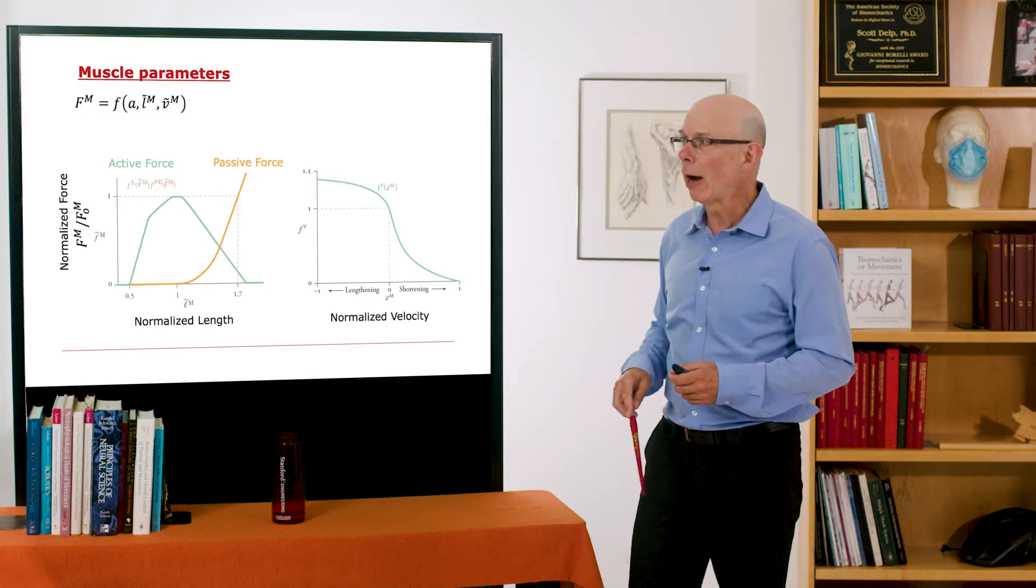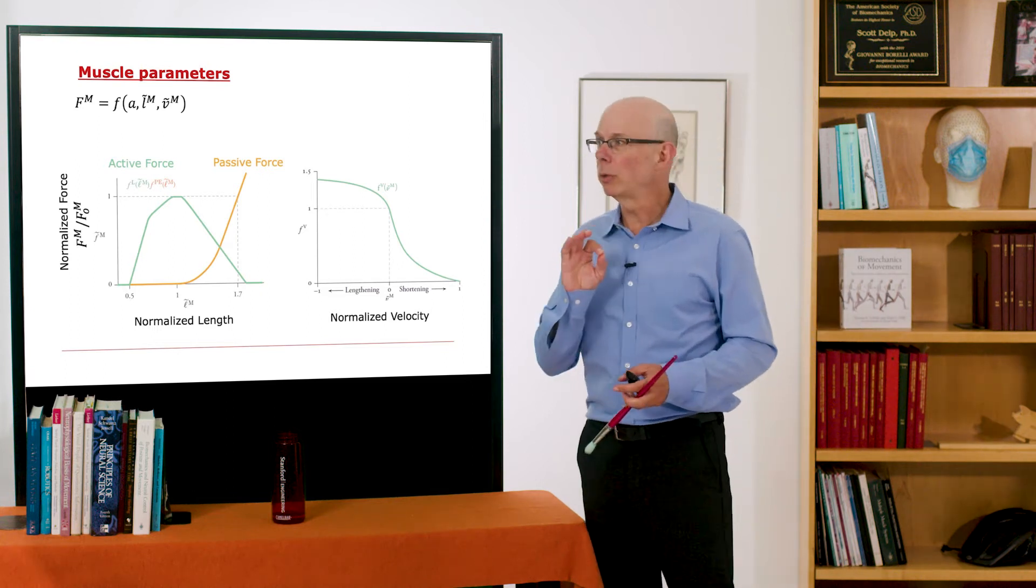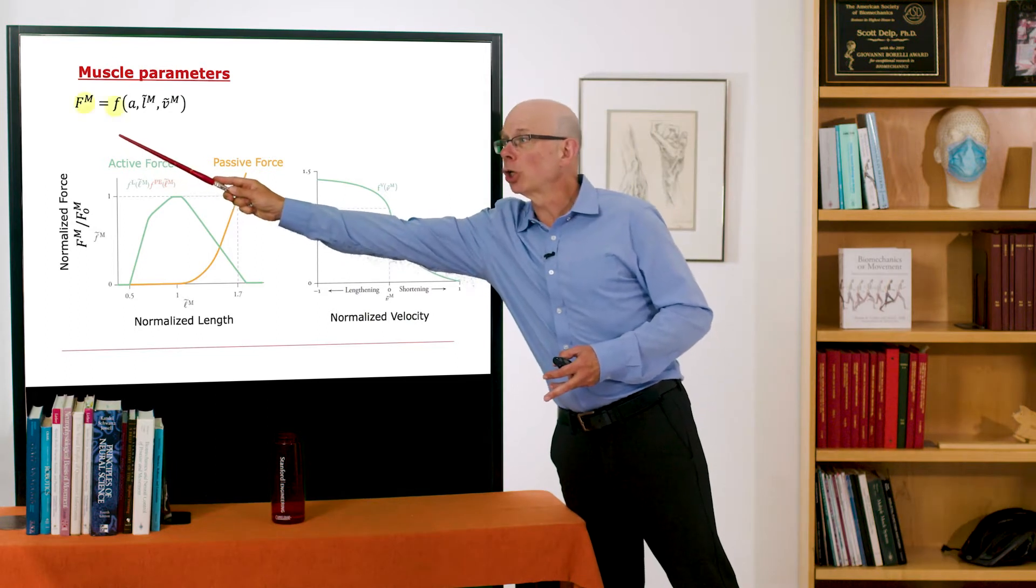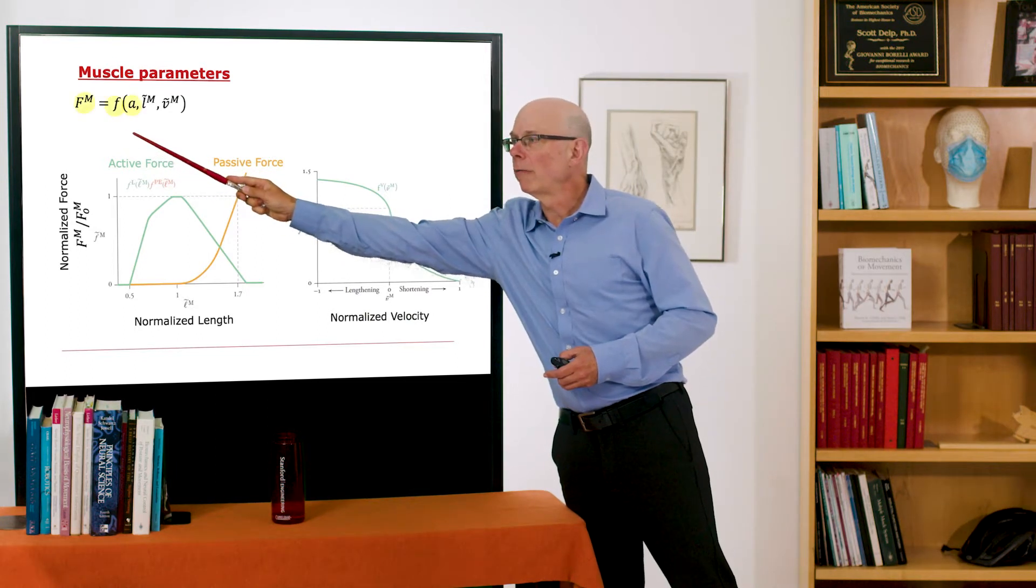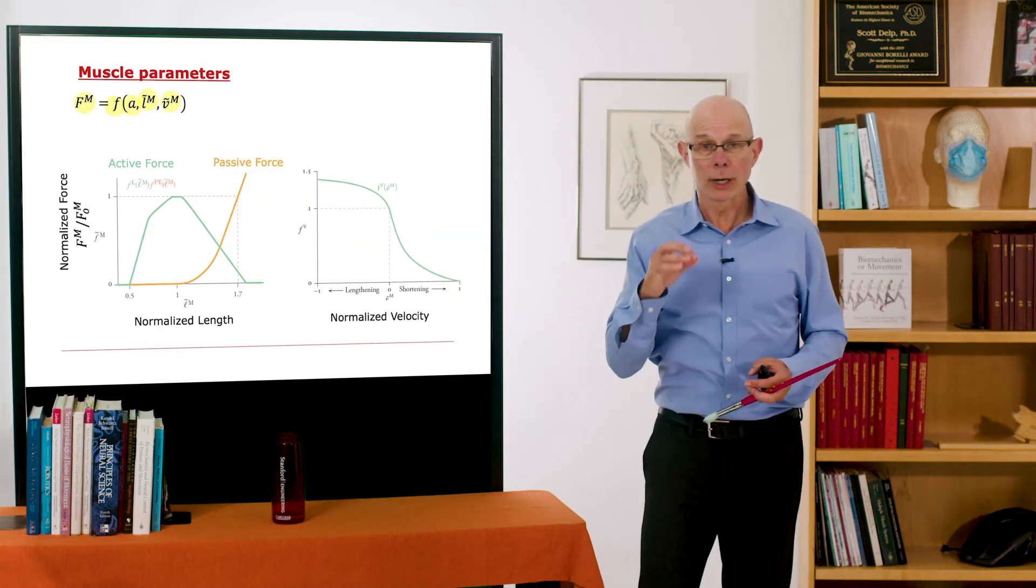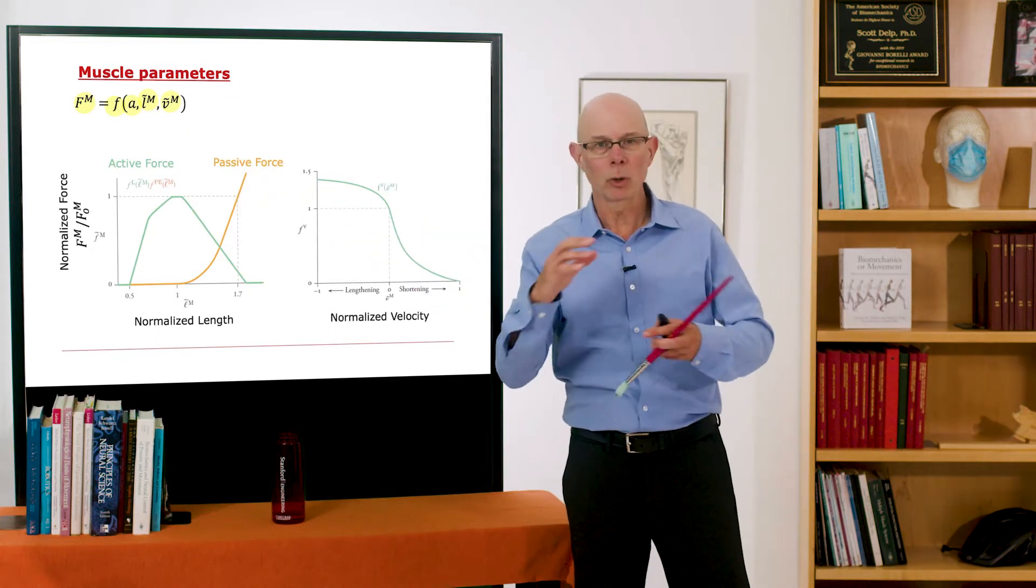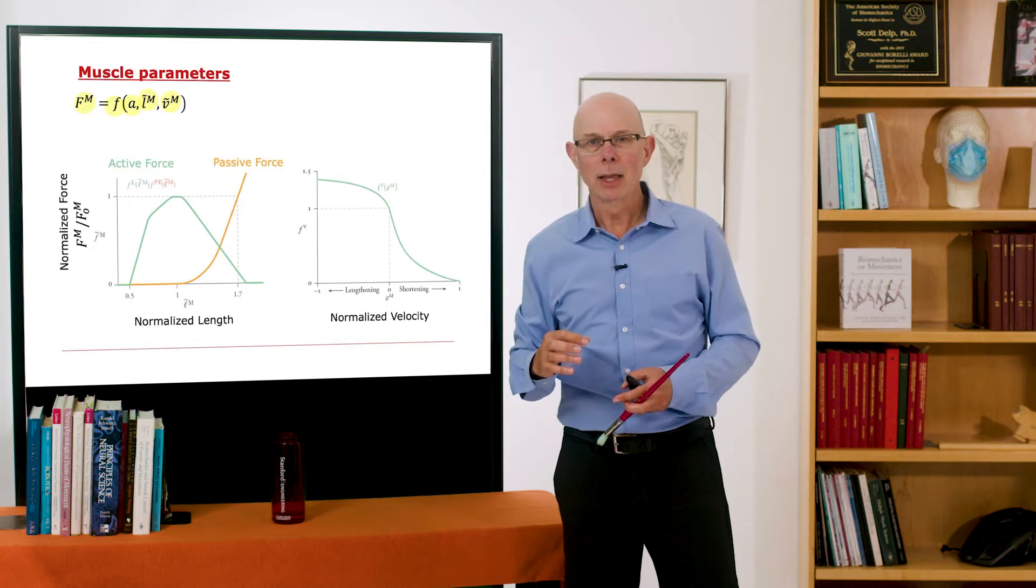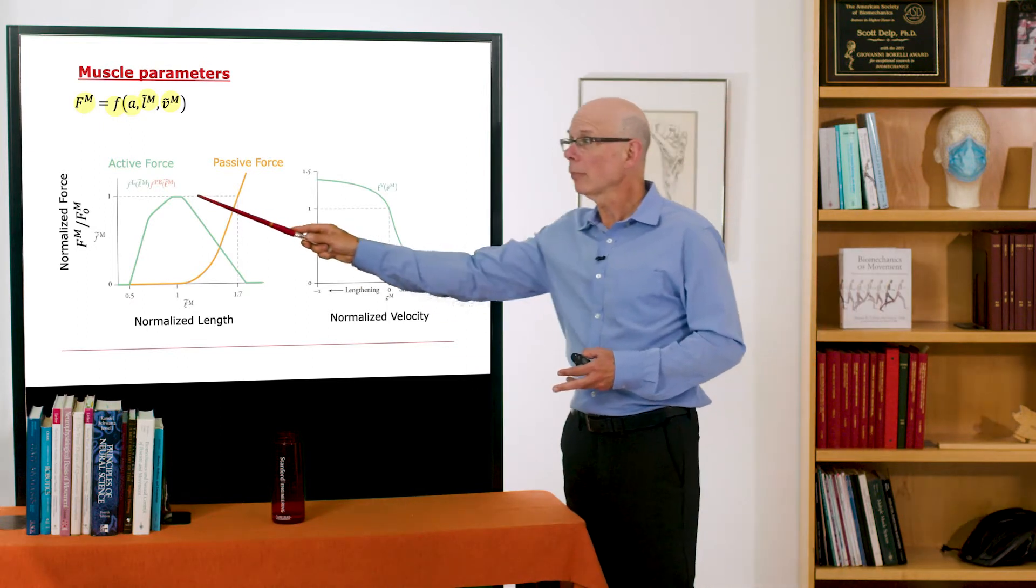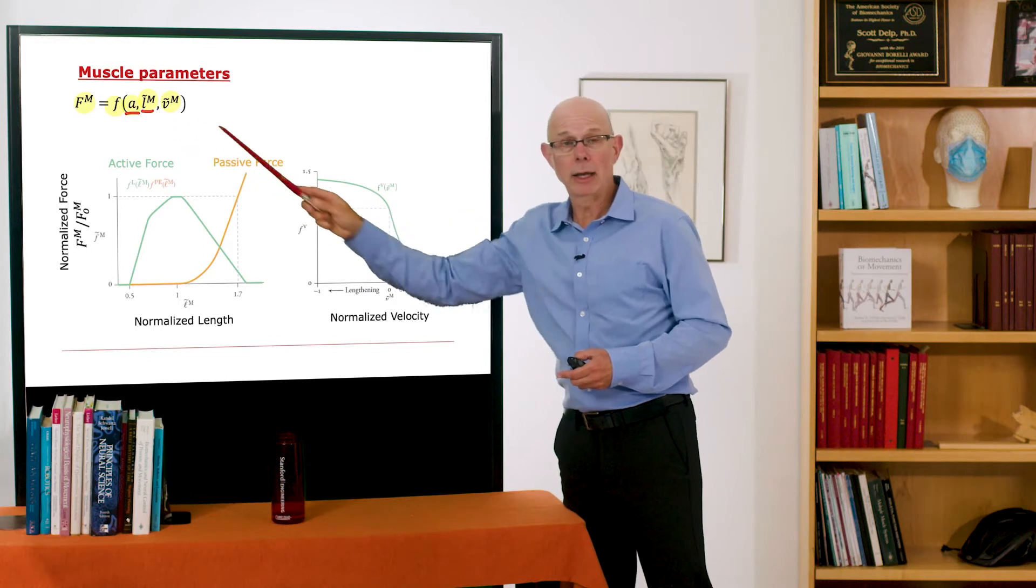What we want to do now is to be able to compute the force in muscle. So the force in muscle is a function of its activation, of its normalized length, and normalized velocity. So if I want to calculate muscle force, the holy grail in biomechanics, I just need to know three things: activation, length, and velocity.